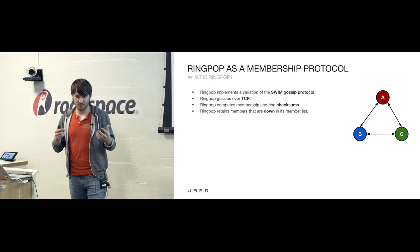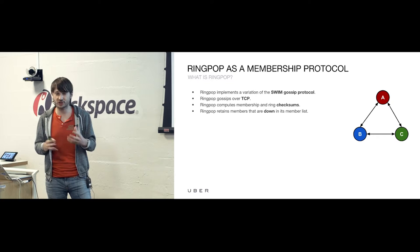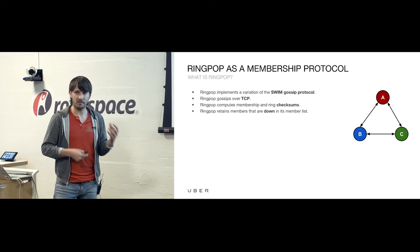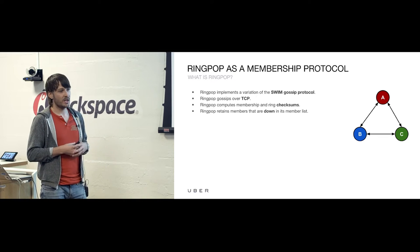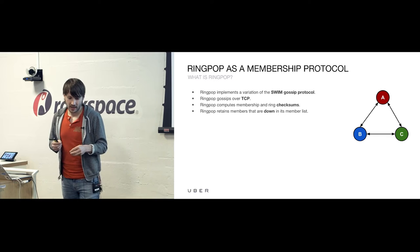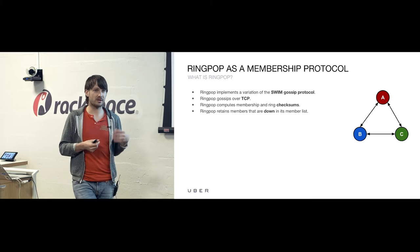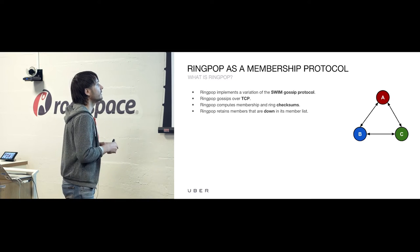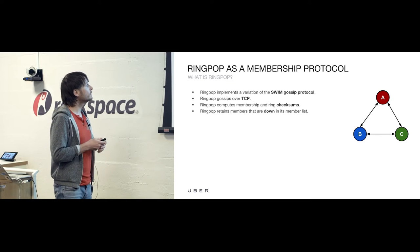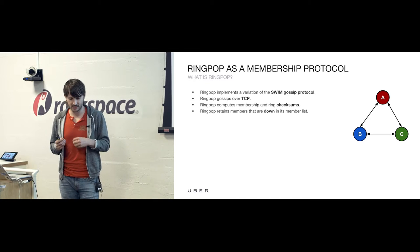RingPop forms a full mesh, and that may not be the most scalable way of doing things, but we are currently measuring how scalable it actually is. We're running RingPop as a standalone service to find out — maybe it'll scale up to 5,000 nodes, 10,000, however many we find out. Maybe we'll have to change the underlying transport, but maybe not. Another extension to SWIM is that we compute membership and ring checksums.